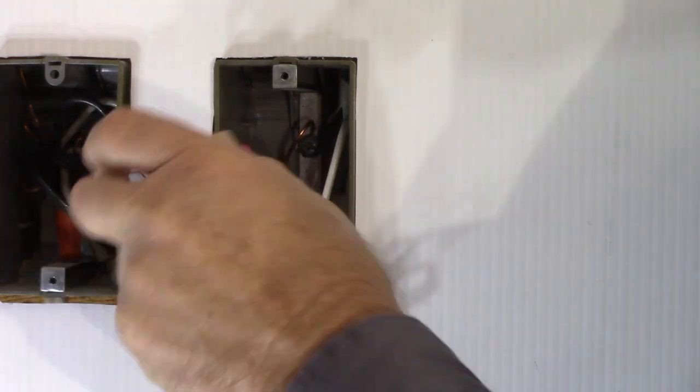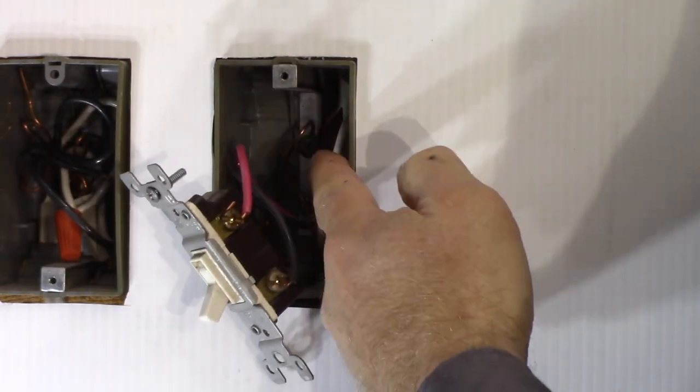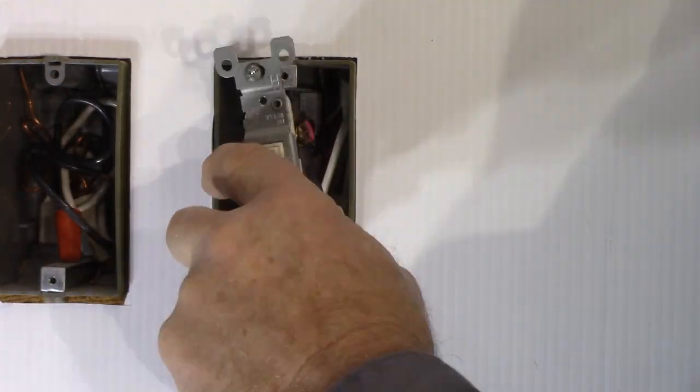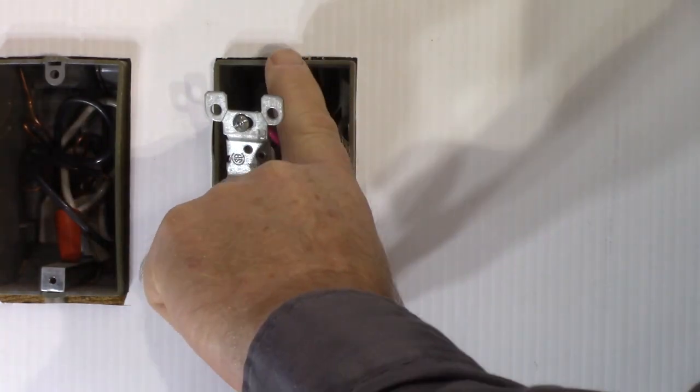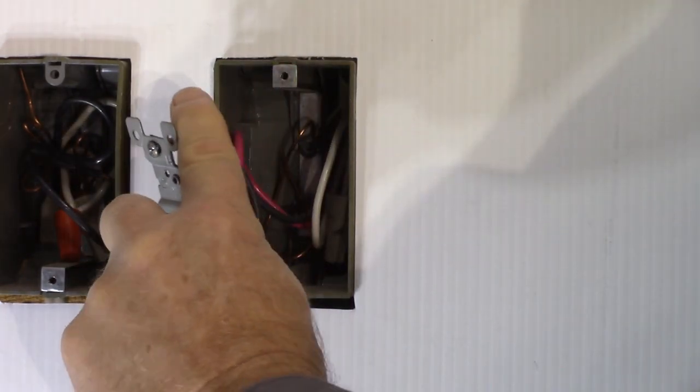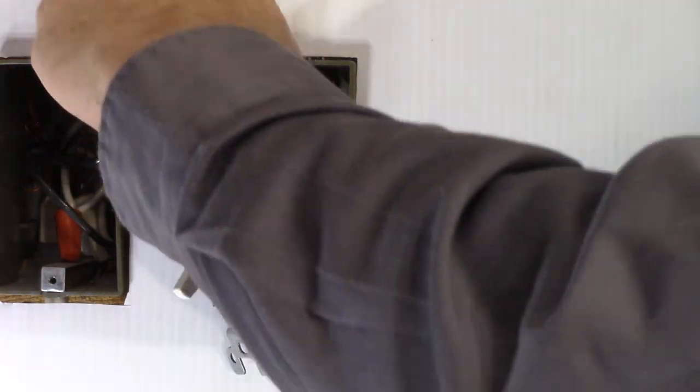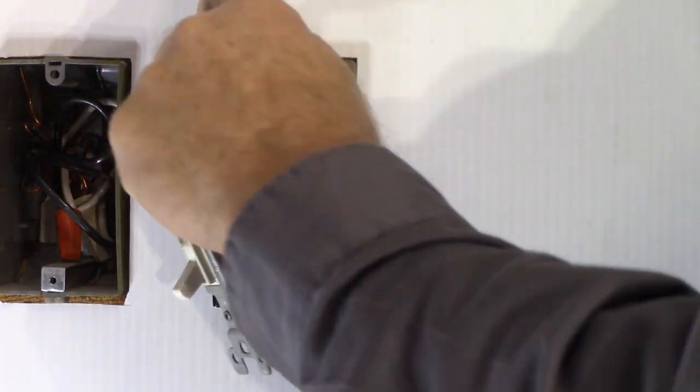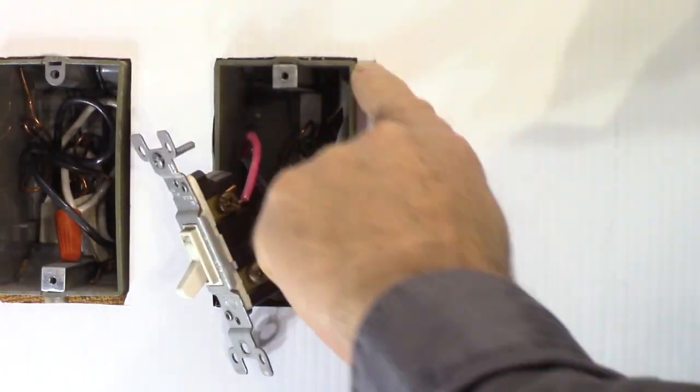Now this does happen where the hole isn't deep enough into a device box. Another place I see this a lot is if you're using a Decora style receptacle or switch. Well when you put that in, especially if you're in a kitchen backsplash and the tile is cut right down to here, you'll find that the plate screw doesn't thread in.